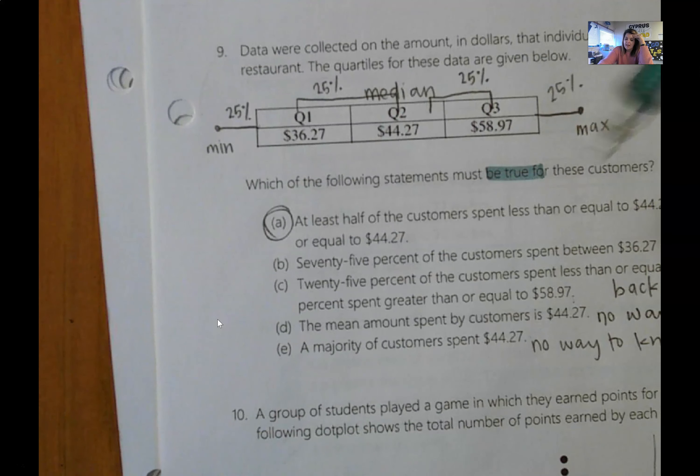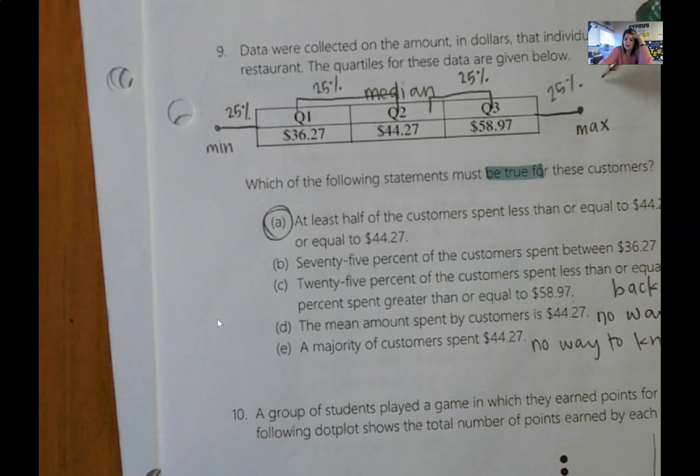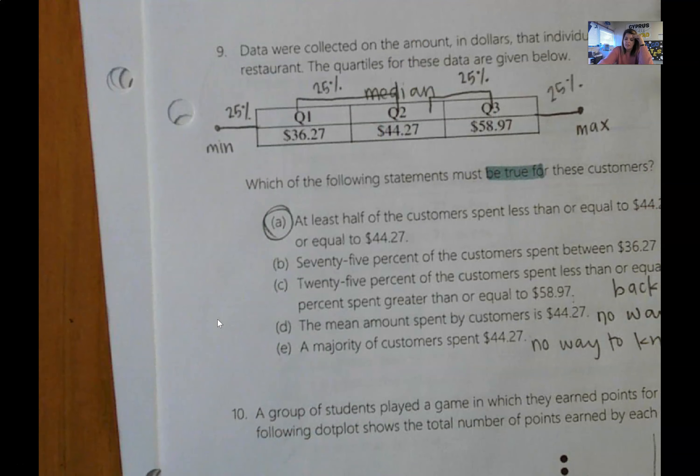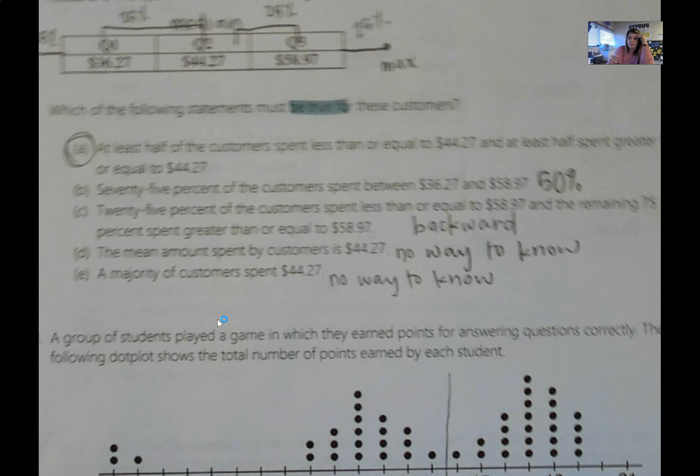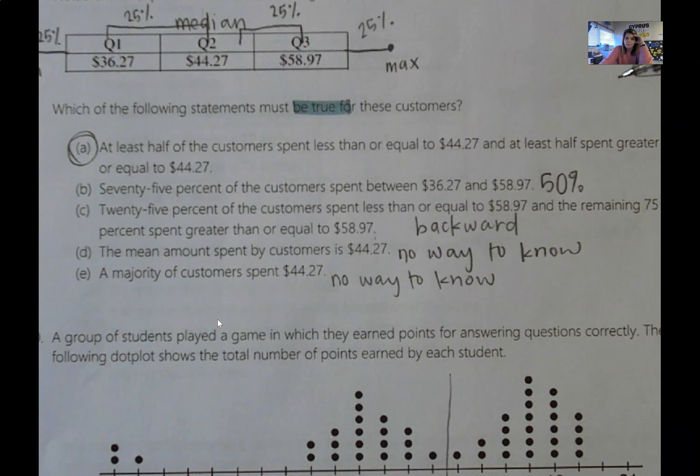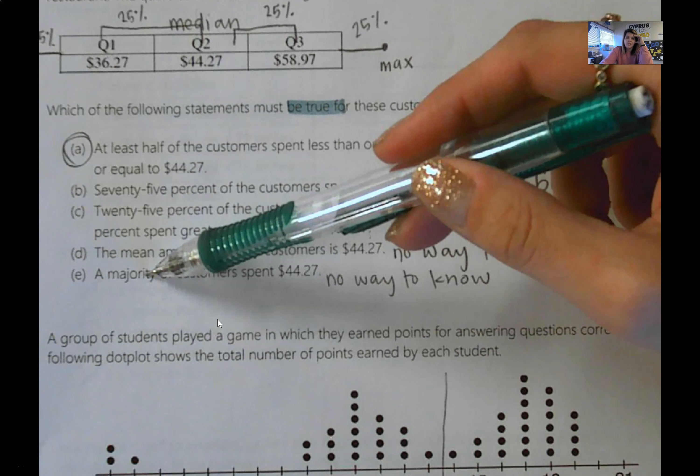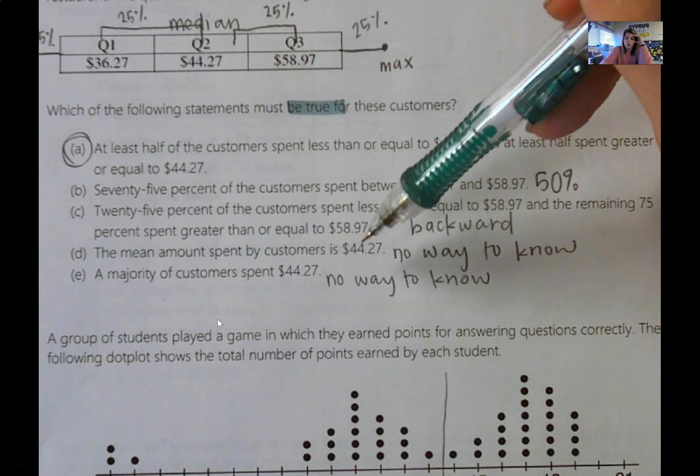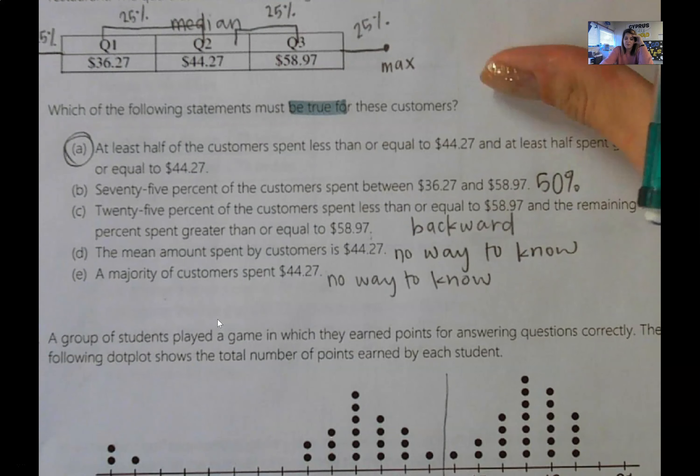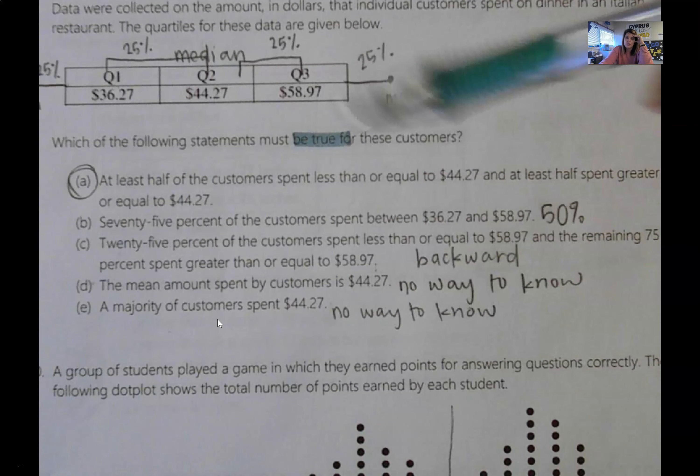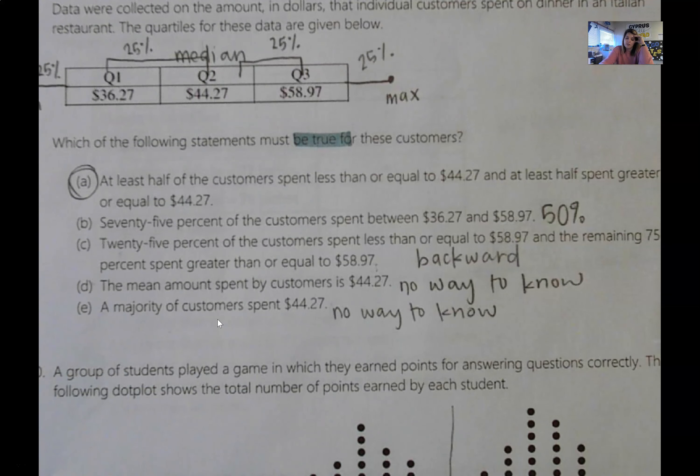At least half of the customers spent less than $44.27 or more. So less than the median is 50%, greater than the median is 50%. If you go through and look at the rest of these, you can see my justification why these are not right. Especially D and E. There's no way for us to know the mean or the peak, which would probably be your majority. Because we don't know the number of observations and we don't really even know the observations. The only data that we have is these three numbers in the data set. So there's no way for us to know D or E.